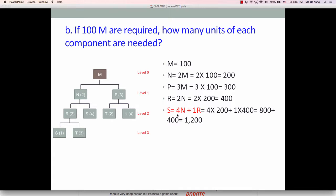So here, S requires 4N plus S requires 1R. So 4 times 200 plus 1 times R is 400, which is 1200. Similarly, T equals 2P plus 3R. So 2 times 300 plus 3 times 400, which is 1800.